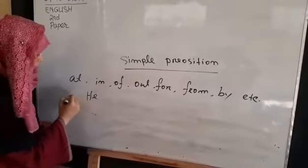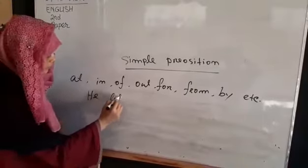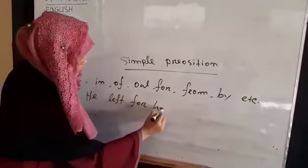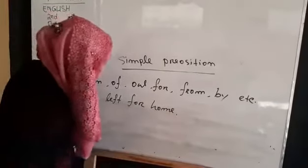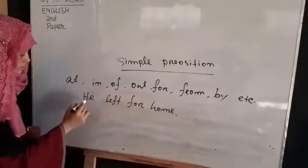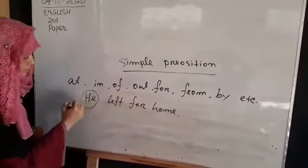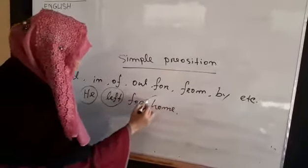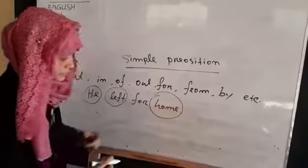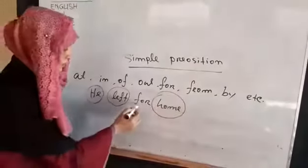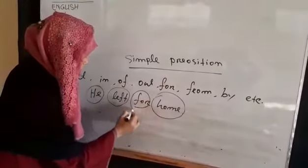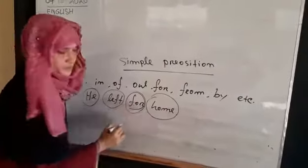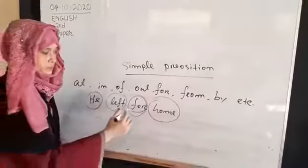For example, he left for home. In this sentence: he is subject, left is verb, home is position. At least for, in this sentence the word 'for' is a preposition before the location.